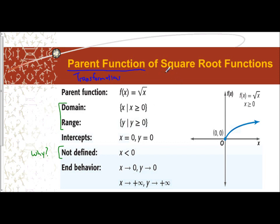The reason the graph is not defined for x less than 0 is because we are dealing with square root functions. The smallest number you can take the square root of and still graph on the real number coordinate plane is 0. If I take the square root of 0, I get 0. But if I take the square root of negative 1, I'm dealing with imaginary numbers, and we cannot graph imaginary numbers on the coordinate plane.